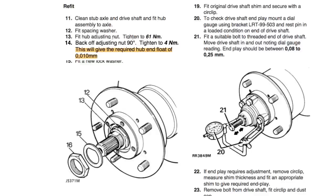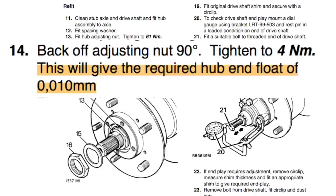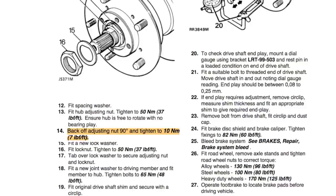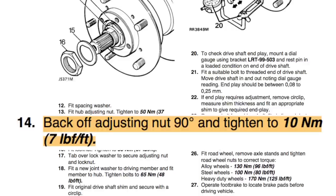Looking at the Land Rover Discovery which is in the 90s, it will say to tighten up to 4 newton metres and this will give you an end float of the bearing of 0.01 of a millimetre. And later still we're looking at the 300 TDI Discovery workshop manual which just tells you to do it up at 10 newton metres with no end float whatsoever.